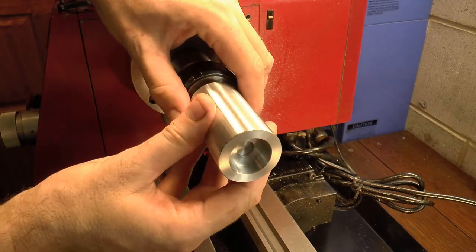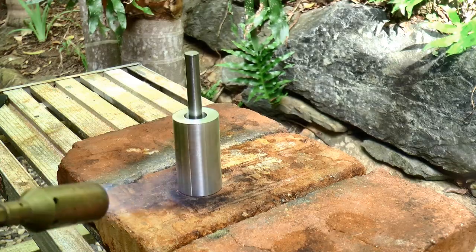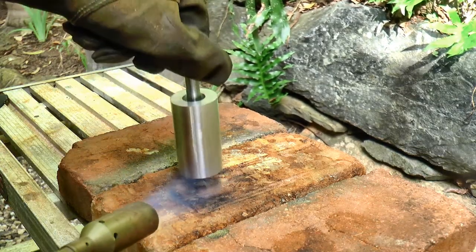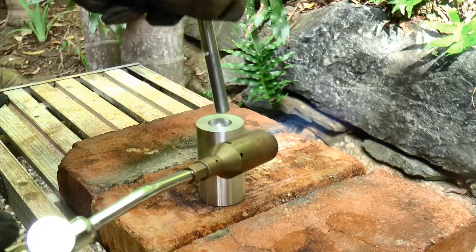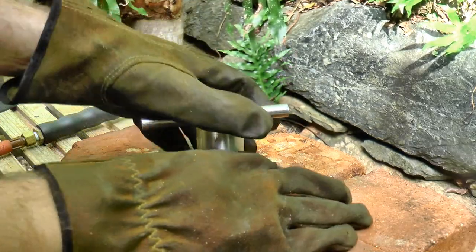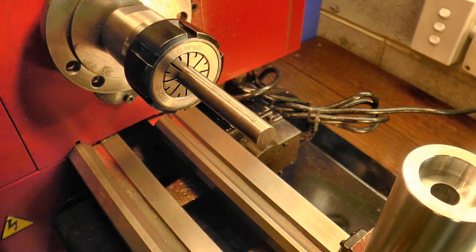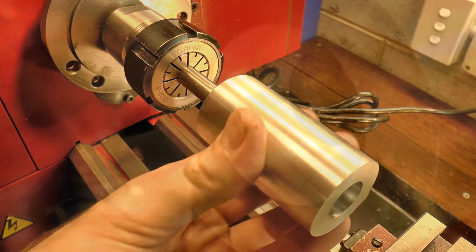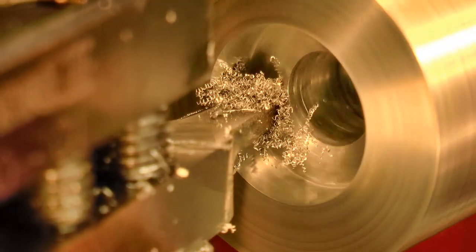The part needs to be flipped and then remounted to take care of the other end. The heat from a torch breaks the super glue bond, but I'm pretty sure that vapor coming off isn't overly healthy, so I wear breathing protection whenever I heat super glue. The part was then remounted on the arbor and the other recess turned to final size.